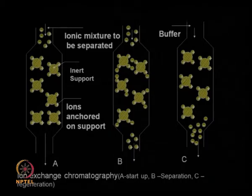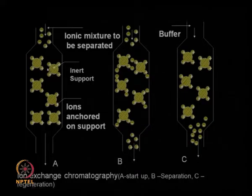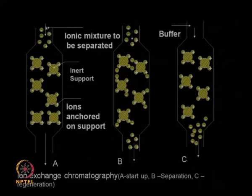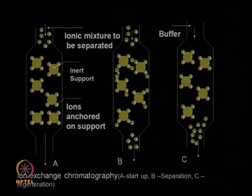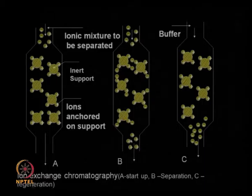What happens in an ion exchange chromatography? We have an inert support — nowadays they use more of a polymeric base support — and you have ions. In this example, we are showing positive ions all anchored onto the inert support. Suppose you are introducing a mixture of cations and anions; the negative ions will bind to the positive ions, so the exhaust stream will have only positive ions coming out.